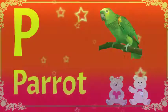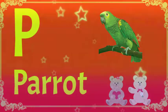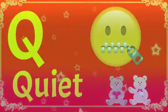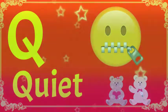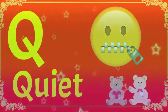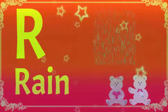P for parrot, parrot means tota. Q for quiet, quiet means shant. R for rain, rain means varsha.